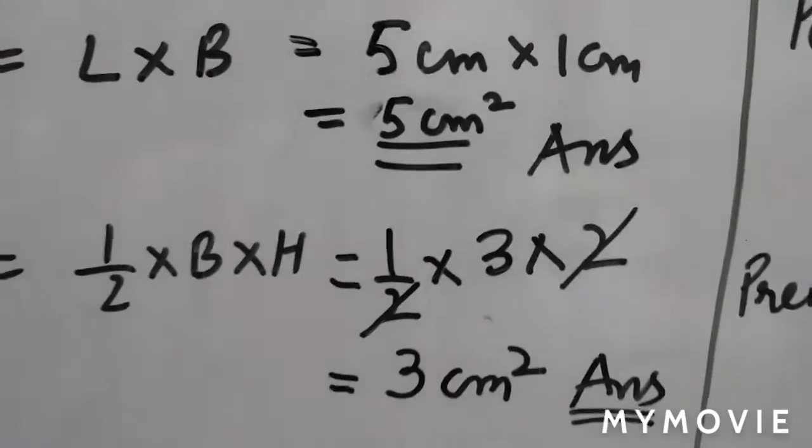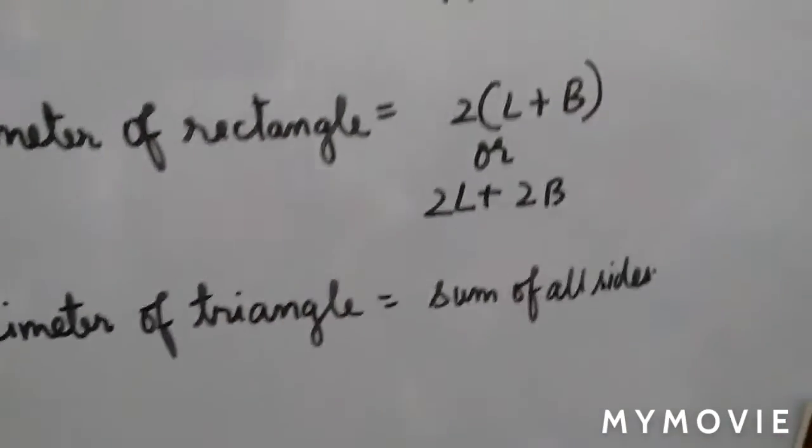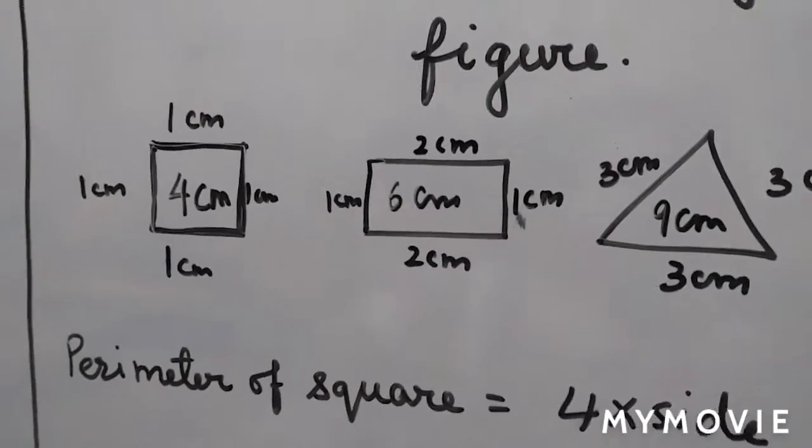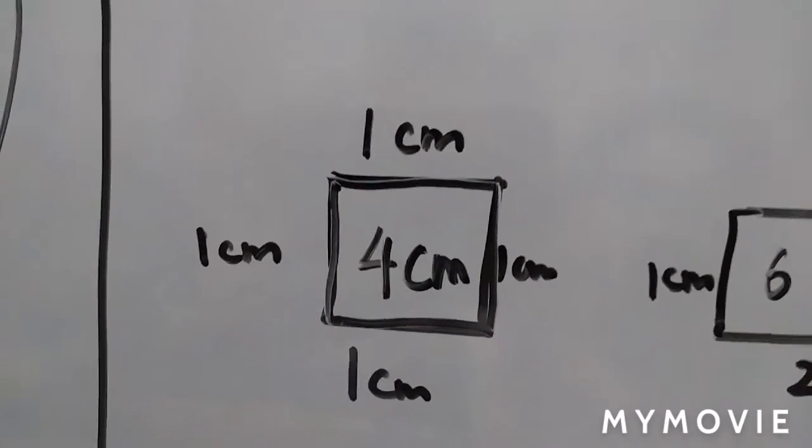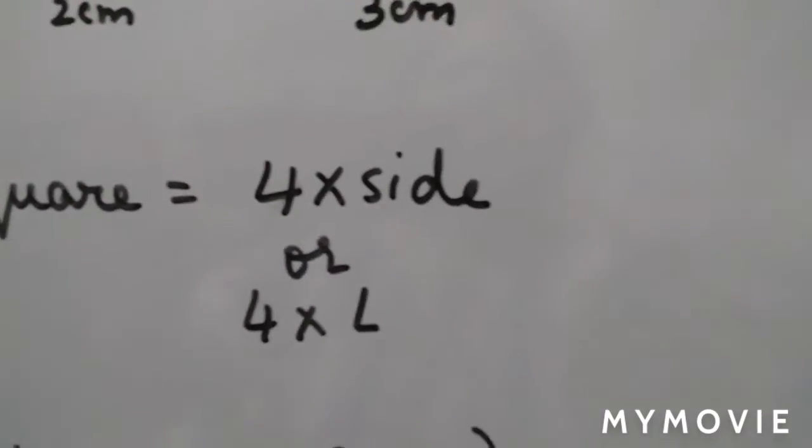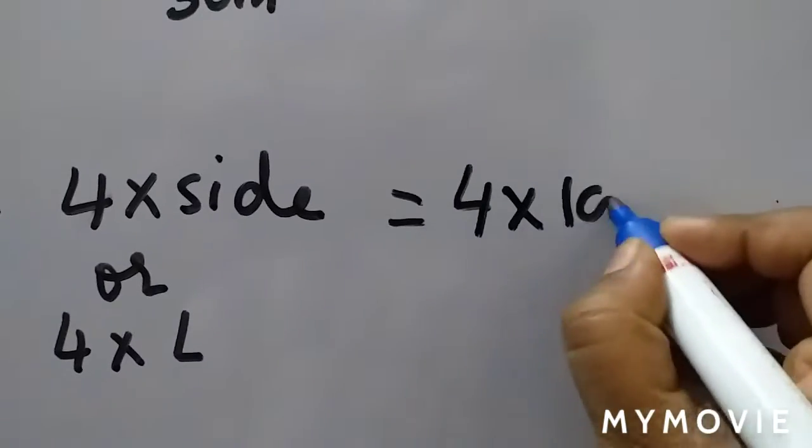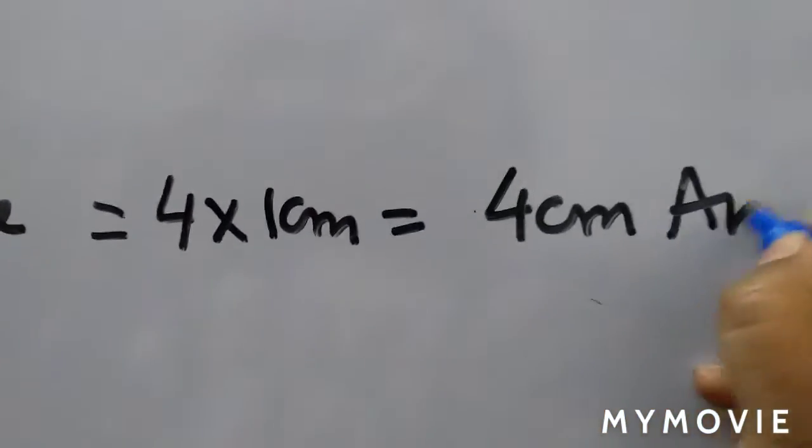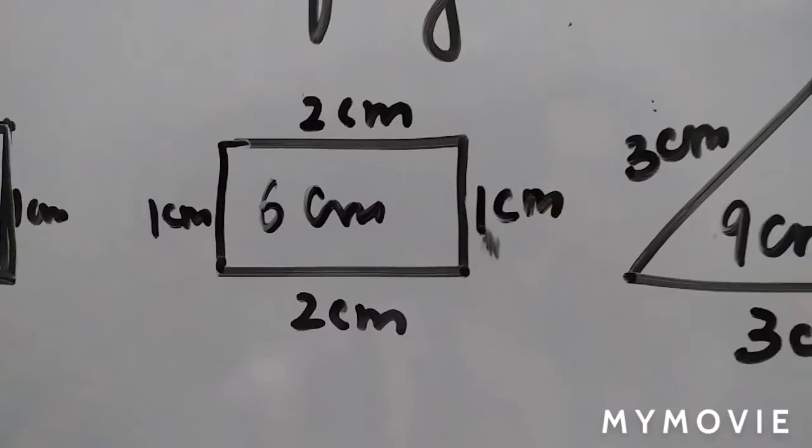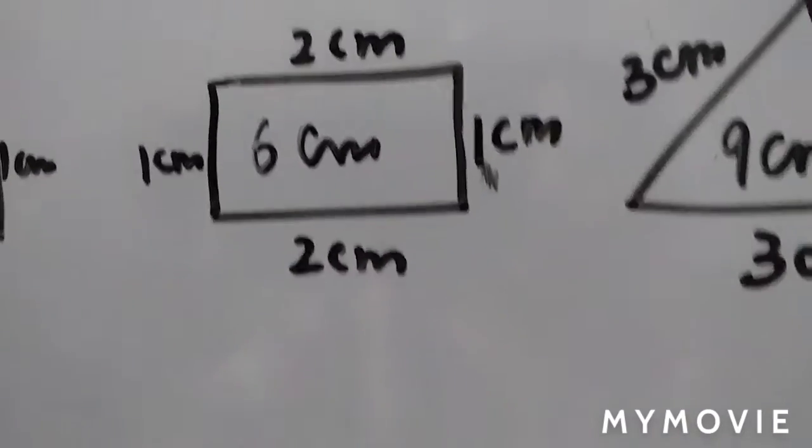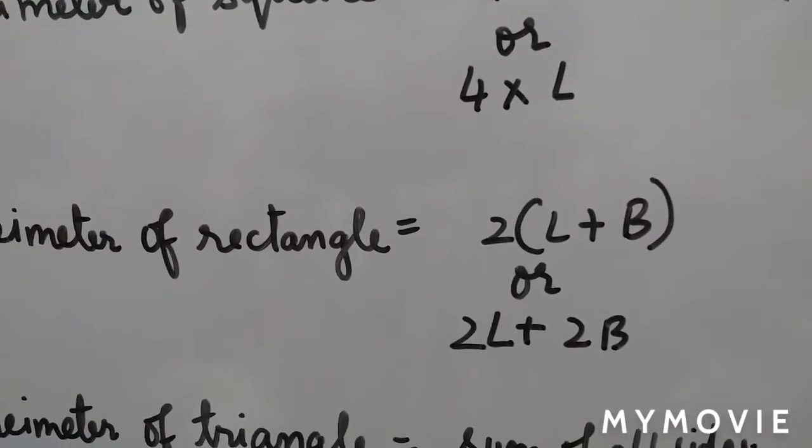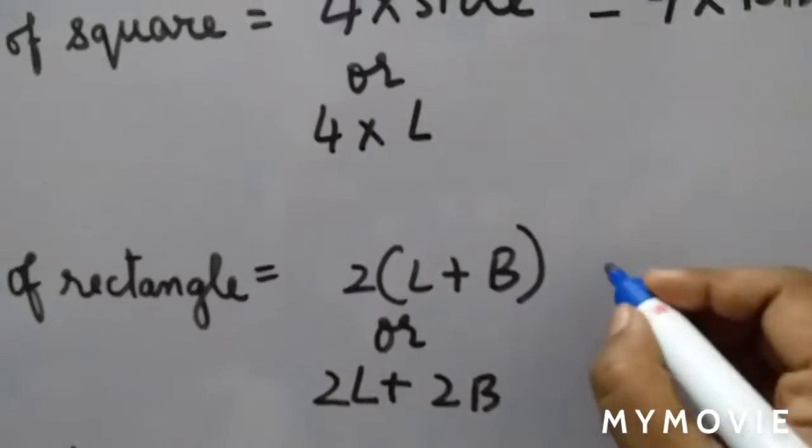Now we'll come to the perimeter calculation. In perimeter, you have to add all the sides. First, we'll do the square. For square, if you add all sides, we get 4 centimeters. If you use the formula, you write 4 into side, means 4 into 1 centimeter, which equals 4 centimeters. Similarly, for rectangle, you add all sides, or you can use this formula: perimeter of rectangle is 2(L+B) or 2L + 2B.